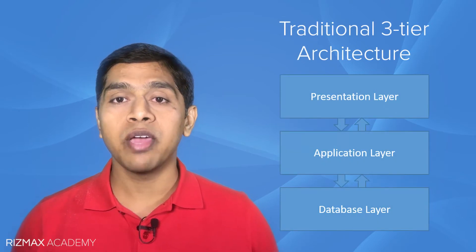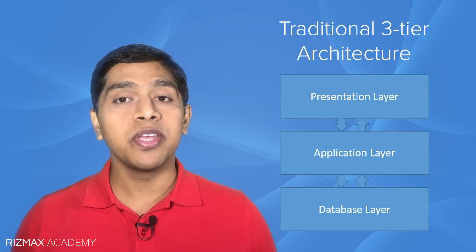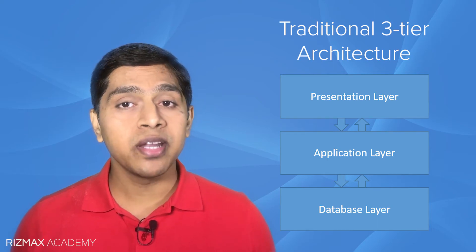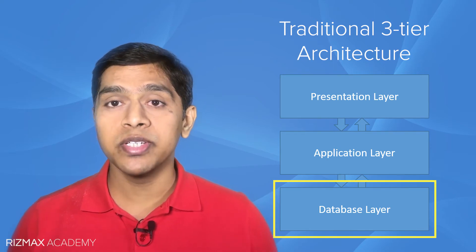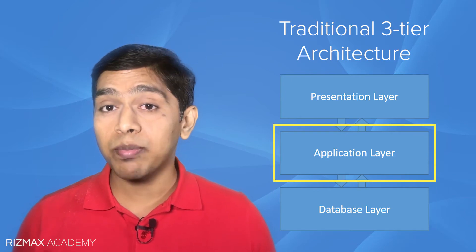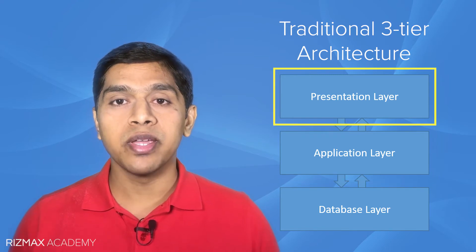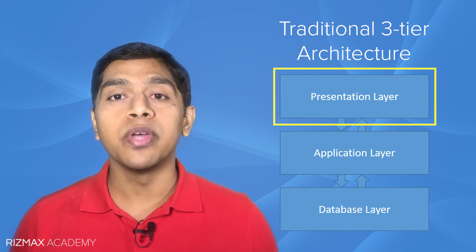In three-tier architecture, we have a database layer, an application layer, and a presentation layer. The database layer is where your database server is. The application layer is where your application code runs. And the presentation layer is where the UI is provided to the end user.